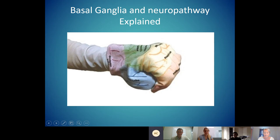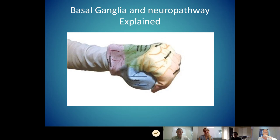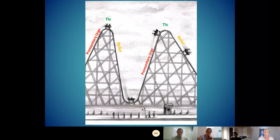This is a brain glove — it has all the external structures on the outside, the internal structures on the inside. What I actually do is have a mini spaghetti strainer, and we put it right in the center of the brain glove to show how central the basal ganglia system is. Here is that roller coaster: for patients with Tourette syndrome, we're riding a premonitory urge, we have a tic, we feel relief after the tic, but then we're riding up the premonitory urge again.